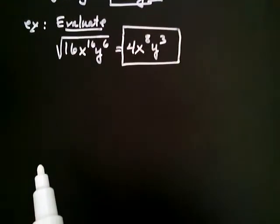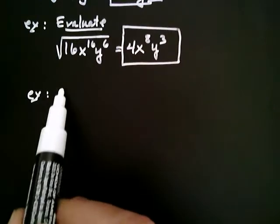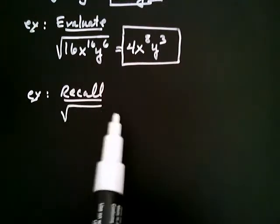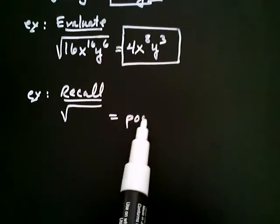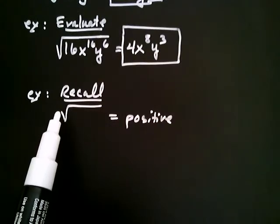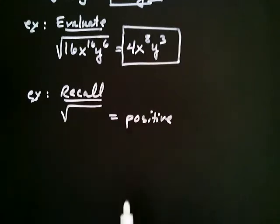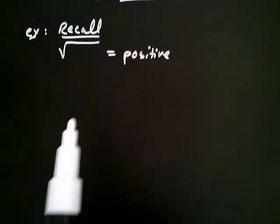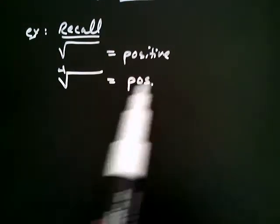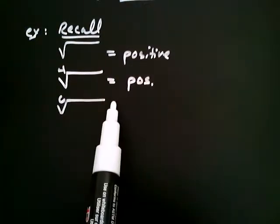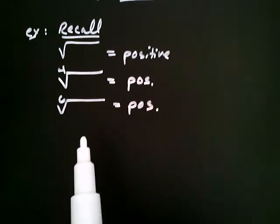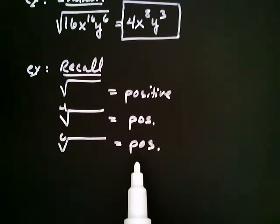If somebody writes the square root of something, whatever you get as the result has got to be positive. That's because of our definition of the square root — when the index is two, the square root always gives you a positive quantity. The same thing is true with any even index: if you had the fourth root or the sixth root, the result is going to be positive as well. With that in mind, I have to go back to the problems I just did and make sure the right-hand side is truly a positive quantity.